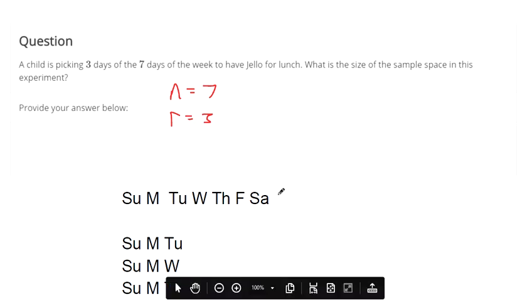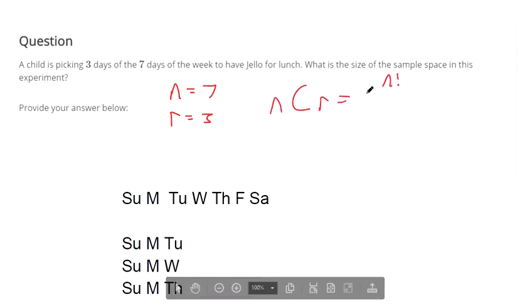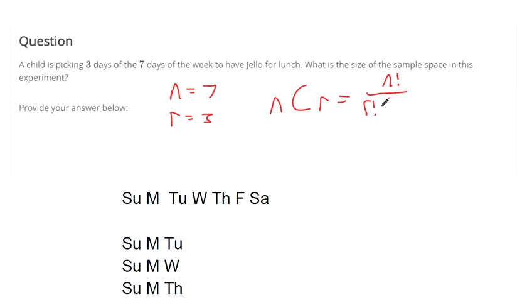And then we plug it in the formula. If you have n and you're trying to choose r, it's n factorial over r factorial times n minus r factorial.